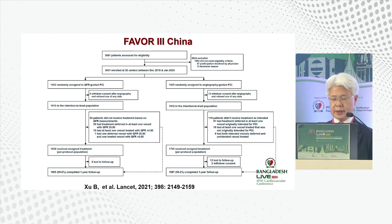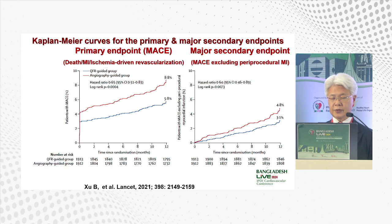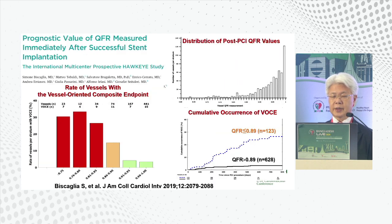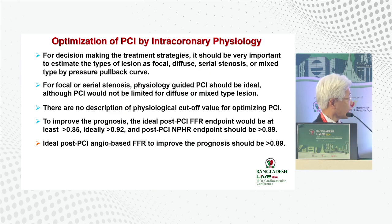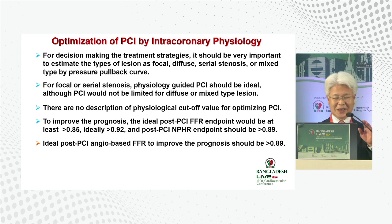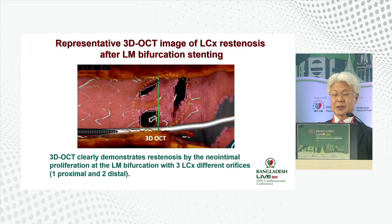CTA-derived FFR and angio-FFR both show good correlation with wire-based FFR measurements. The FAVOR 3 trial demonstrated that QFR-guided PCI is significantly better than angiography-guided PCI alone. The best cutoff for QFR appears to be greater than 0.89. Thank you very much.